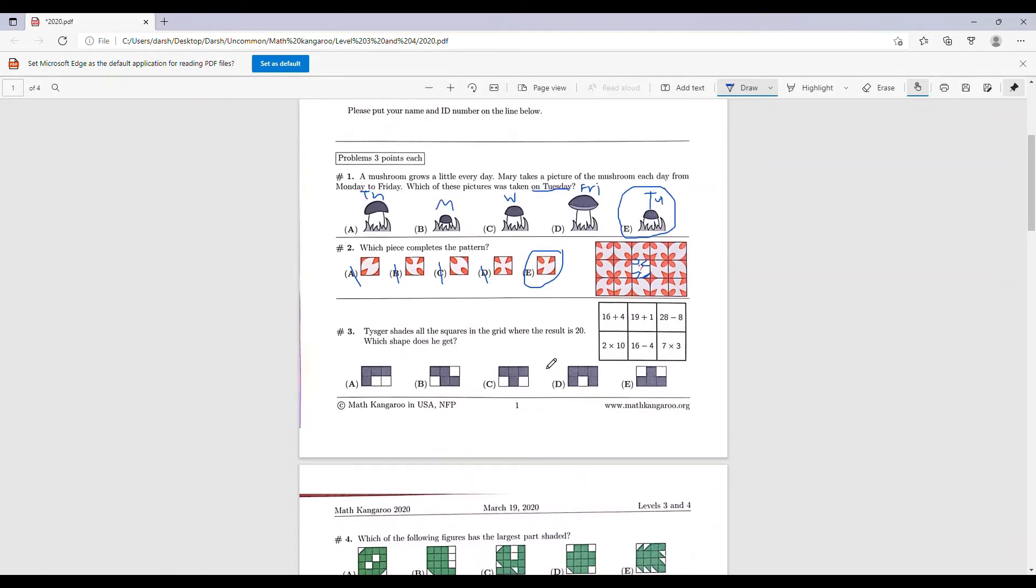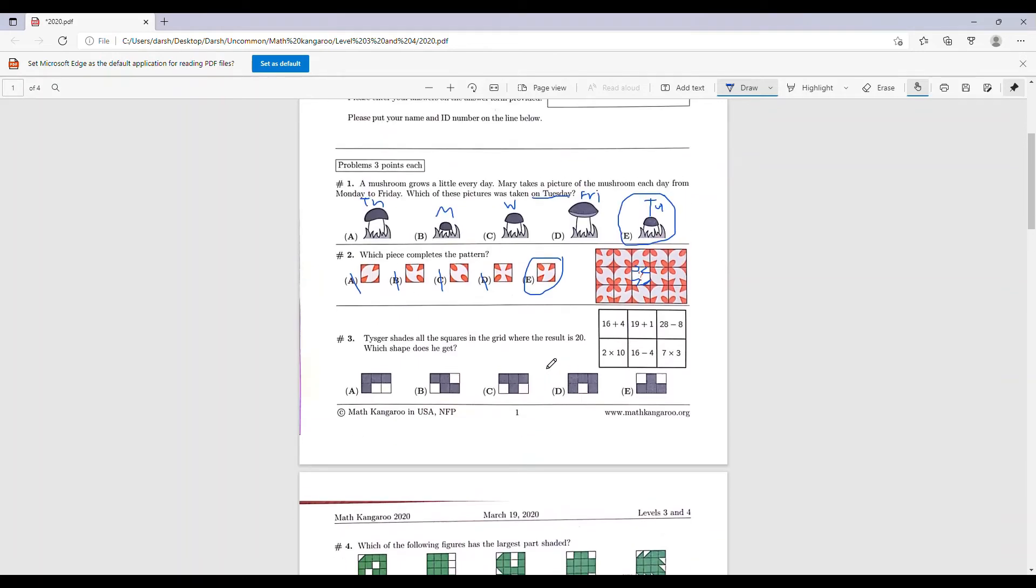Number 3. Teisger shades all the squares in the grid where the result is 20. Which shape does he get? Let's start on this one: 16 plus 4 is 20, so we're going to shade that. 19 plus 1 is also 20, we'll shade that.